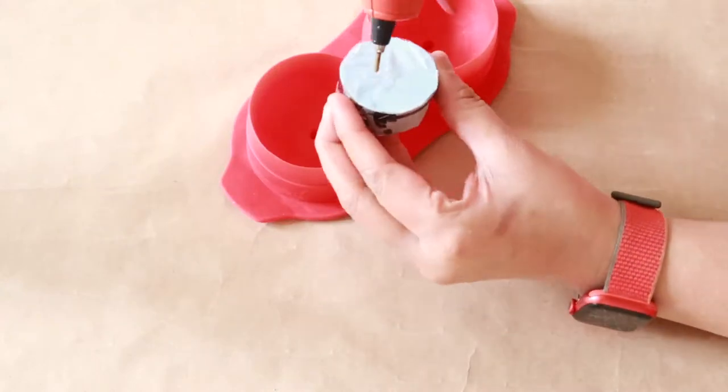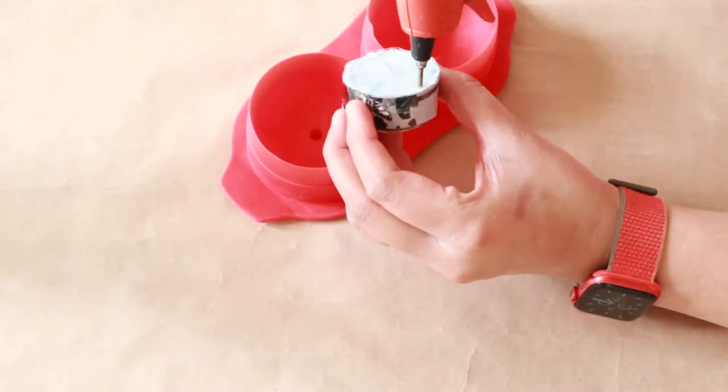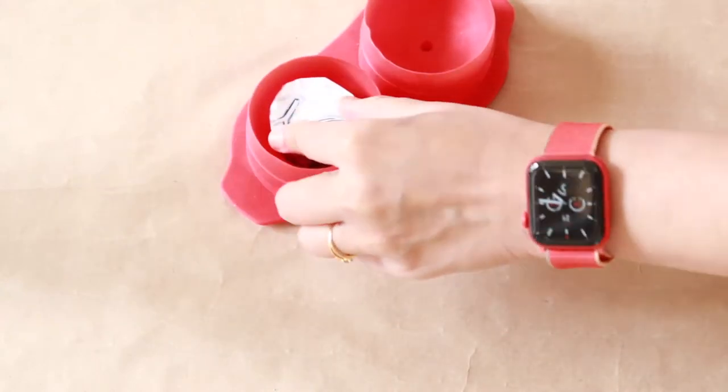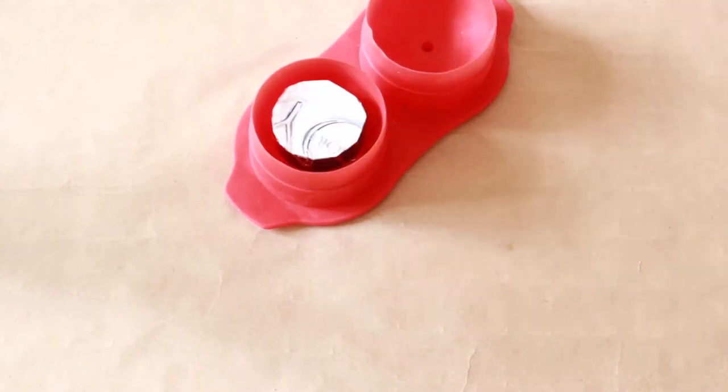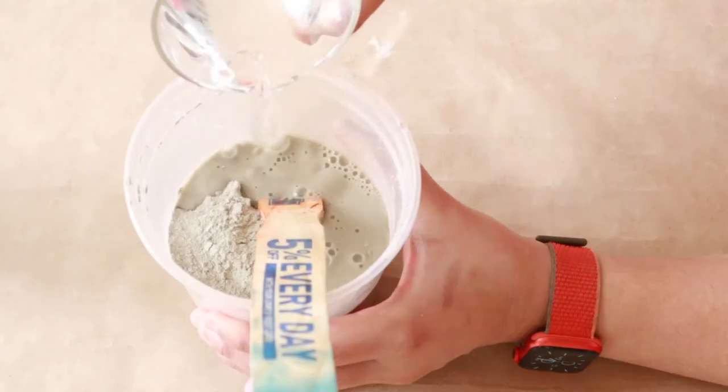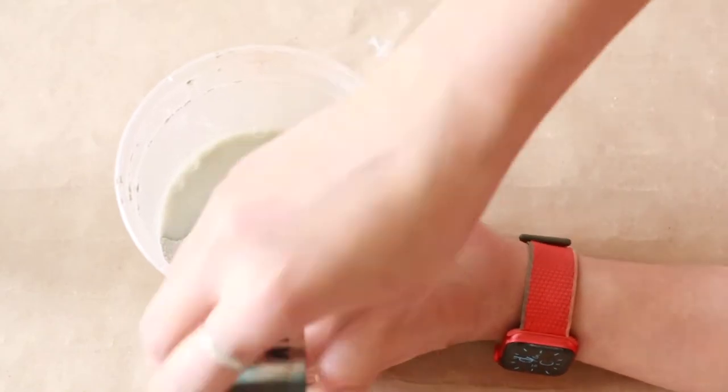Here I'm wrapping the tea light candles with cello tape and paper so that it gets easier to remove the candles once the cement dries out. I just hot glued the candles inside to avoid any movement later.